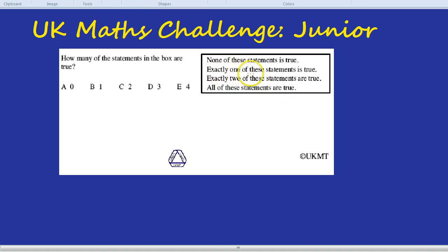Exactly one of these statements is true. Okay, well, if only one of the statements is true, that means that statement itself must be the only one that's true. Because if one of them is true, then that statement there would be correct. Exactly one of these statements is true. But let's check if the other statements would also fit into that. Exactly two of these statements are true. Well, that would be false if it was exactly one. So so far it's right.